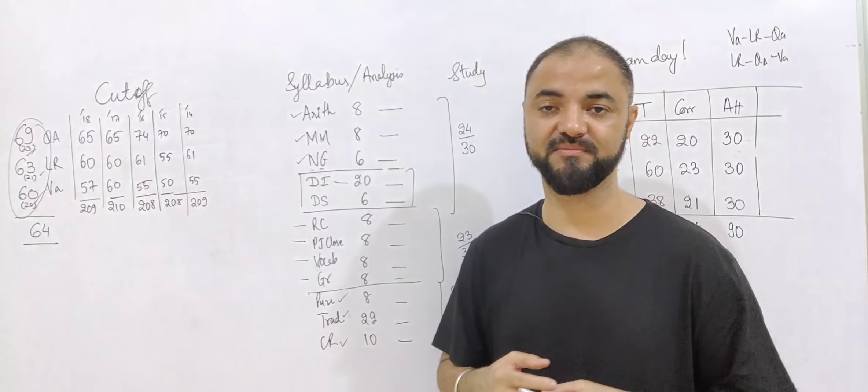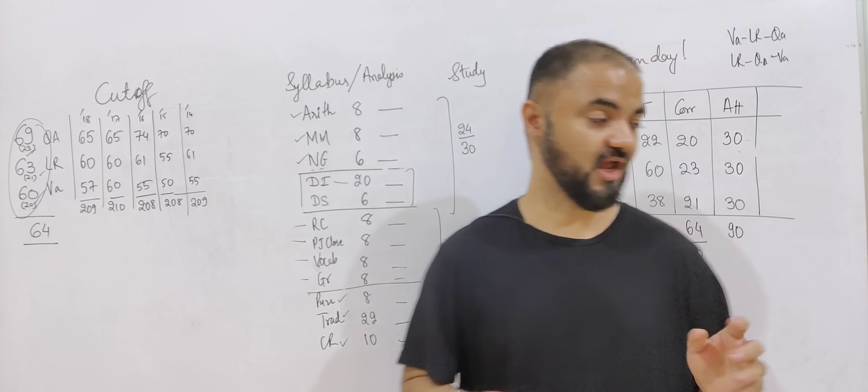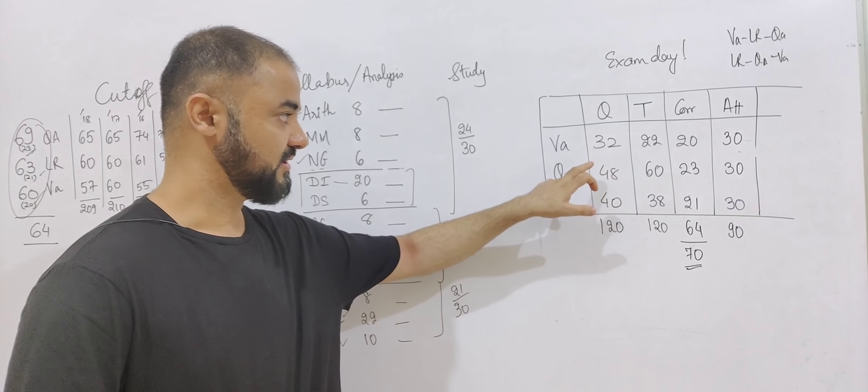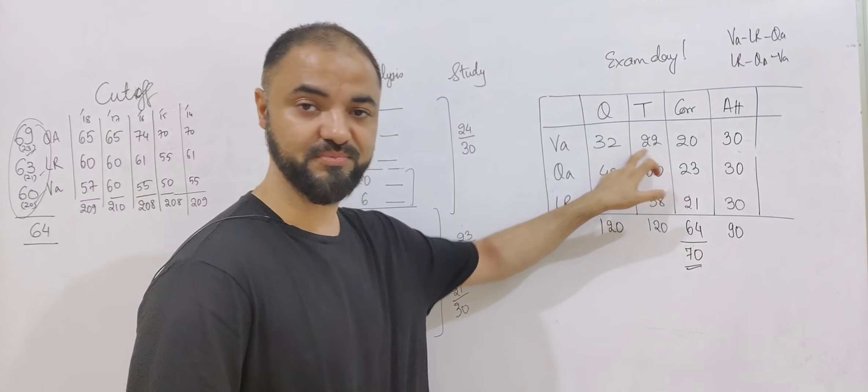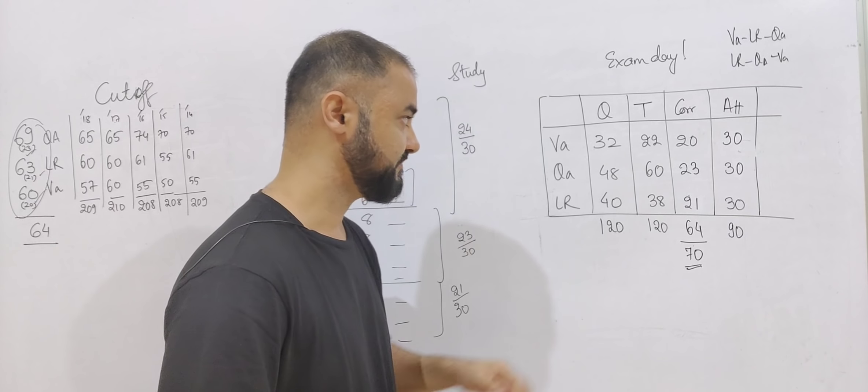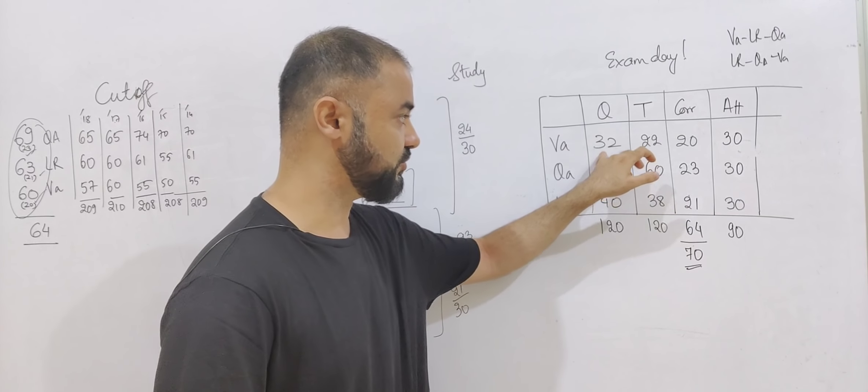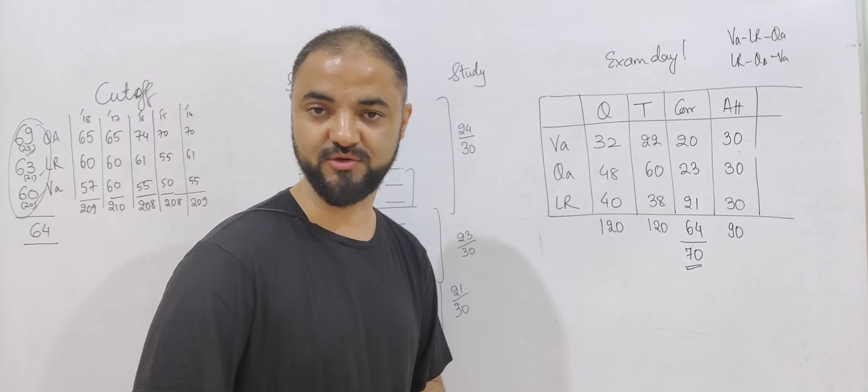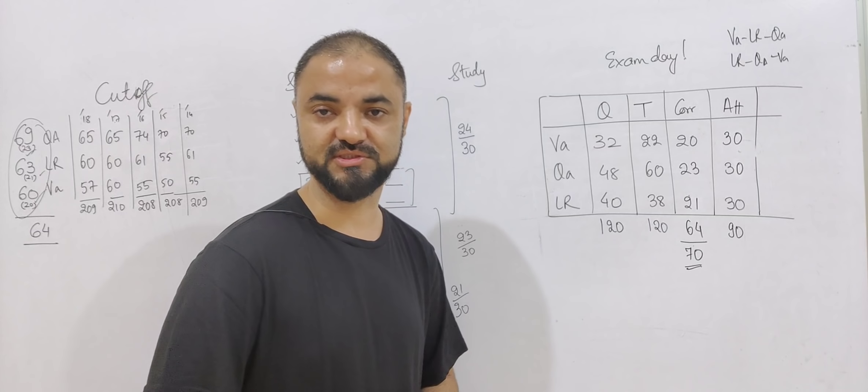This is your breakup, complete breakup. Now moving to the exam day strategy or the mock strategy. Verbal: 32 questions, time is 22 minutes. That's the main problem, you don't have time for that. So we'll keep RC towards the end, that's what I recommend. Out of those 32 questions you have to do 20 questions correct. For 20 questions correct you have to attempt around 28 to 30 questions. So I'm rounding off to 30 questions, that's your target.